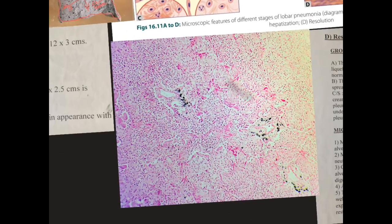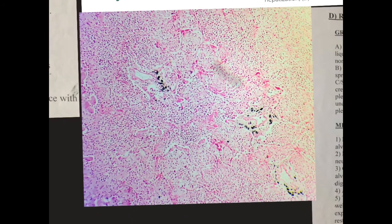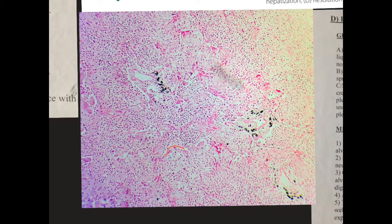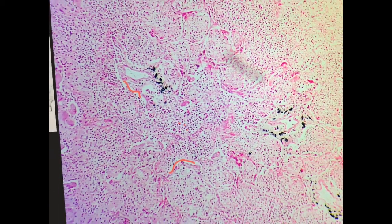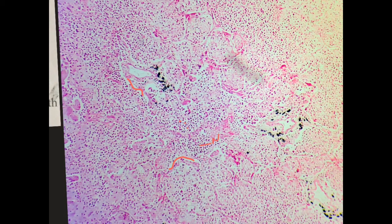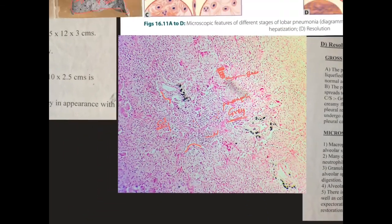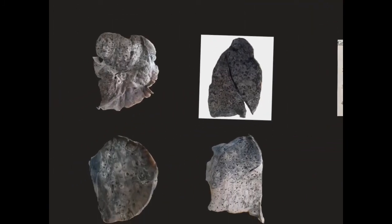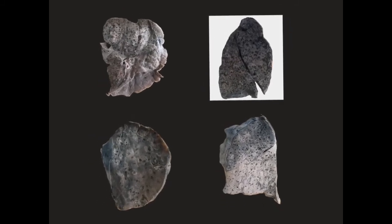Coming to the photomicrograph of the actual slide for your practical: here you can see clear spaces and small dots filling the alveoli — these dots are neutrophils. The photograph was taken at scanner view. This pattern most probably represents gray hepatization, because the spaces show granular debris with neutrophils still present in significant numbers but fewer RBCs, favoring the phase just before resolution.